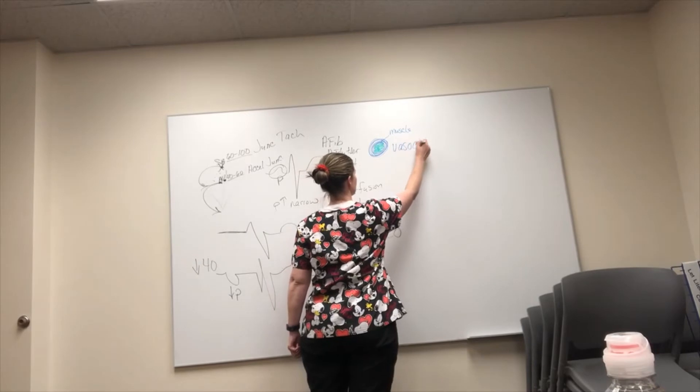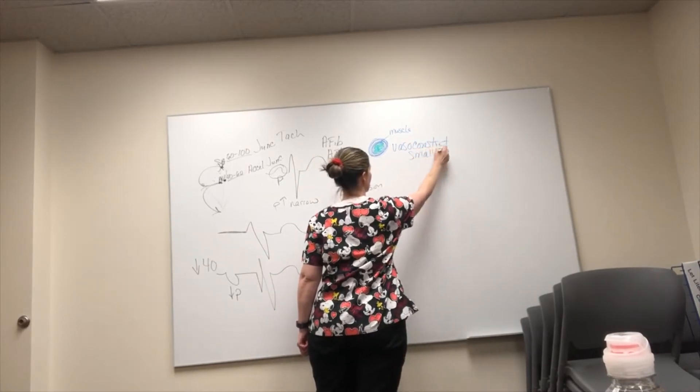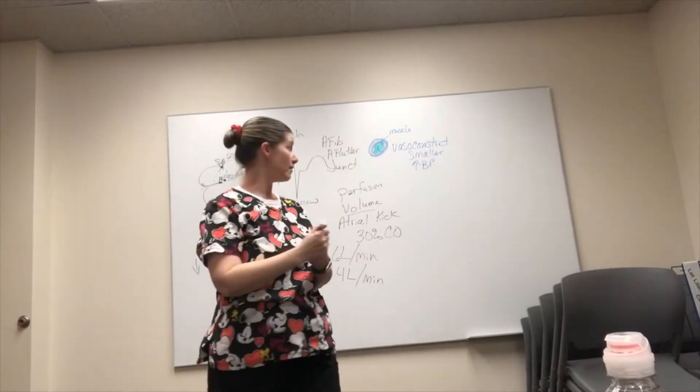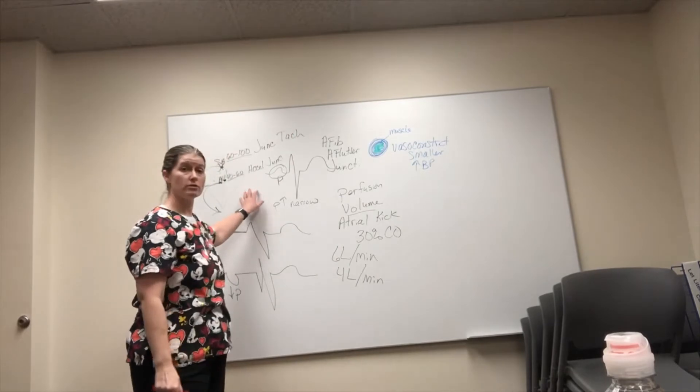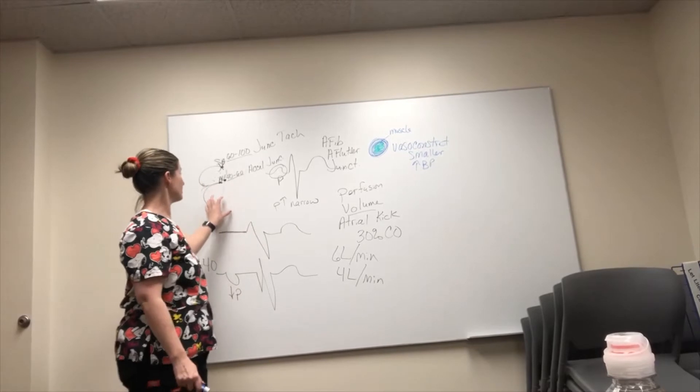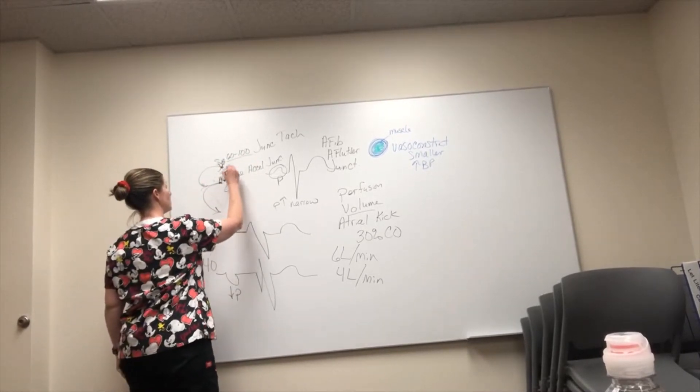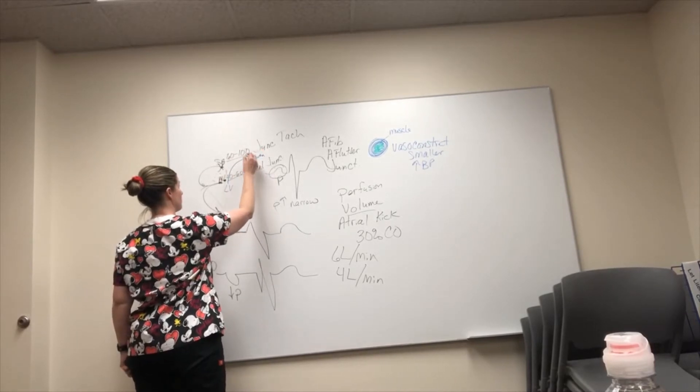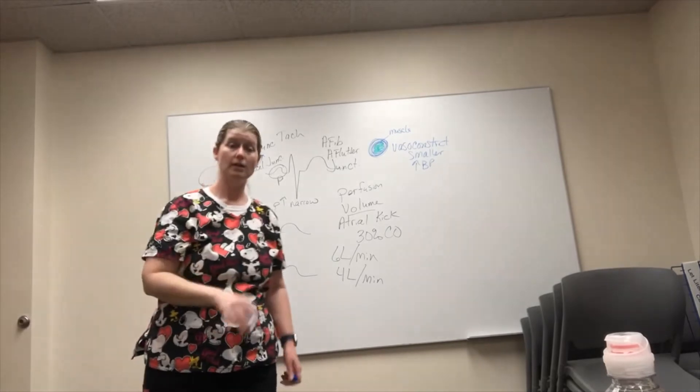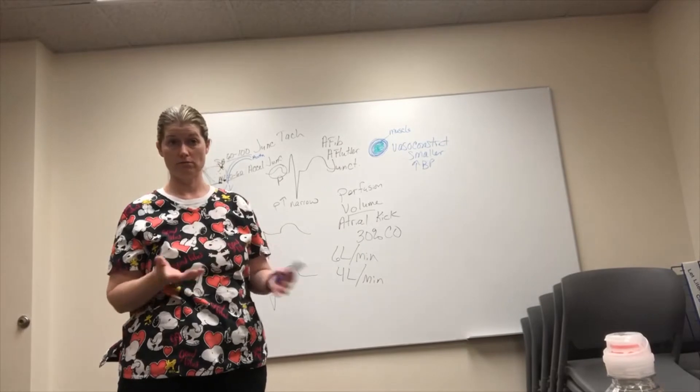So vasoconstricting, or a smaller diameter, increases your pressure. Now when we're looking at your heart, the systolic pressure - the reason we're so concerned about that is because your left ventricle is pumping the blood out through your aorta. And if the systolic pressure is too high, it's going to have trouble pumping the blood out and you're going to end up with a decreased cardiac output.